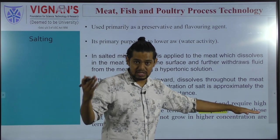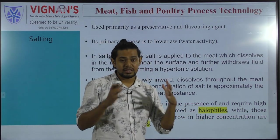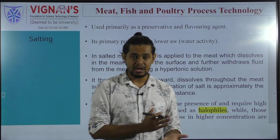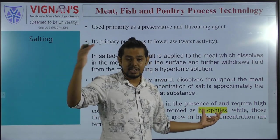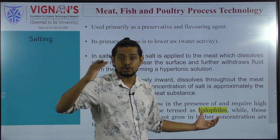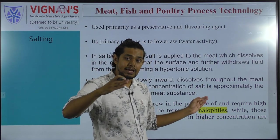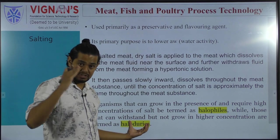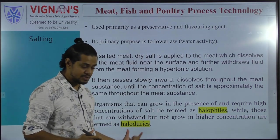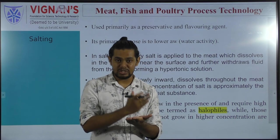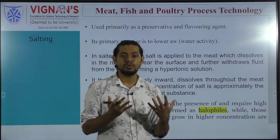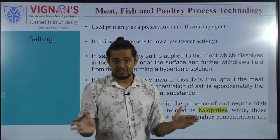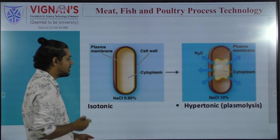Halophiles can resist higher salt content and also multiply under those conditions. Those which can only withstand high salt content but cannot multiply are regarded as halodurics. Halophiles can both grow and withstand higher salt concentration, while halodurics can only resist the high salt concentration but cannot multiply under that condition.